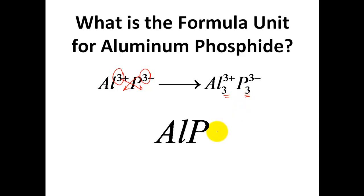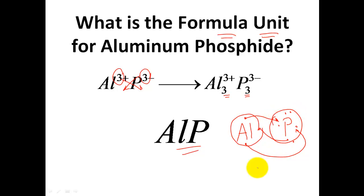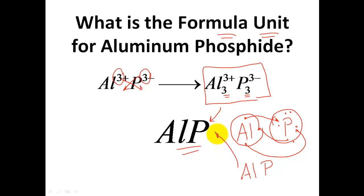The whole goal of this lesson was to determine the formula unit using the crisscross method — simply crossing the charges. As a comparison, the Lewis dot structure method also works: drawing electron transfers for aluminum and phosphorus, you count one aluminum and one phosphorus, giving AlP. Both methods give the same answer — a formula unit in the lowest whole number ratio possible. Hope this helped, best wishes, catch you later.